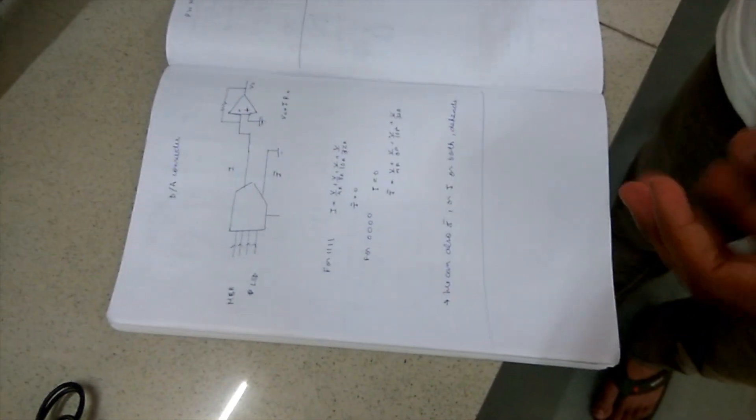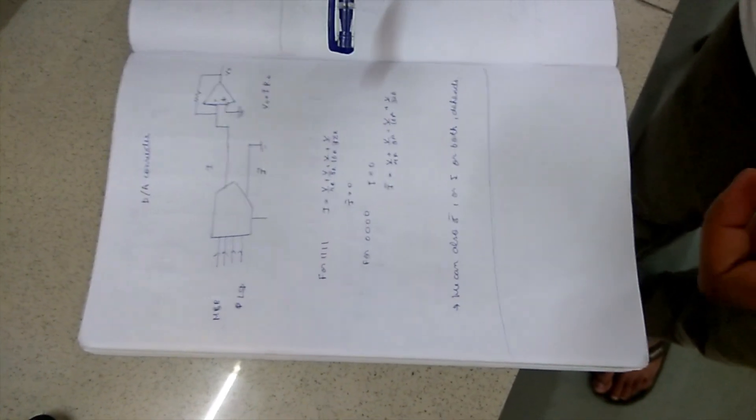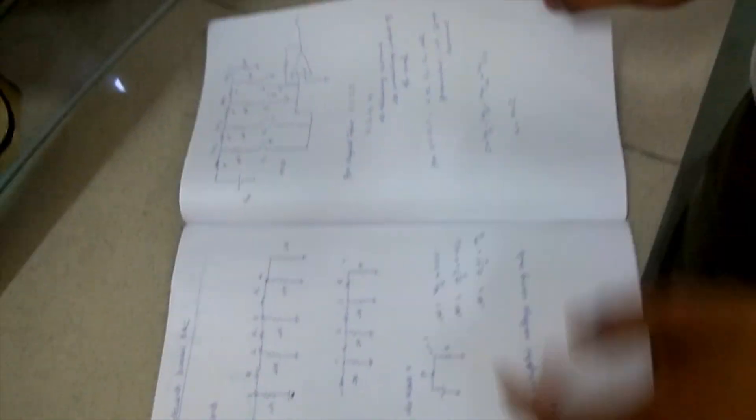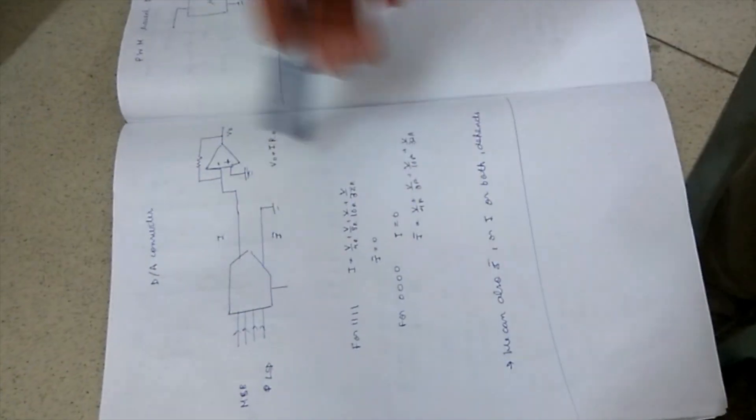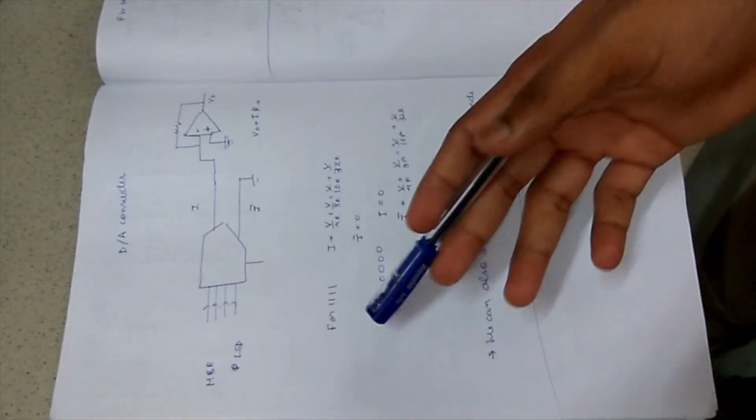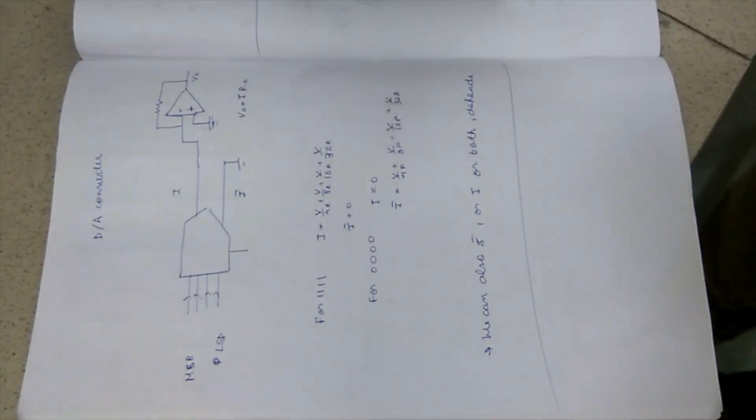The general circuit diagram for this R2R method is something like this. Inside this circuit, we have all of this circuit. All of the things remain the same. We can have different combinations of digital signals which will give different analog signals.